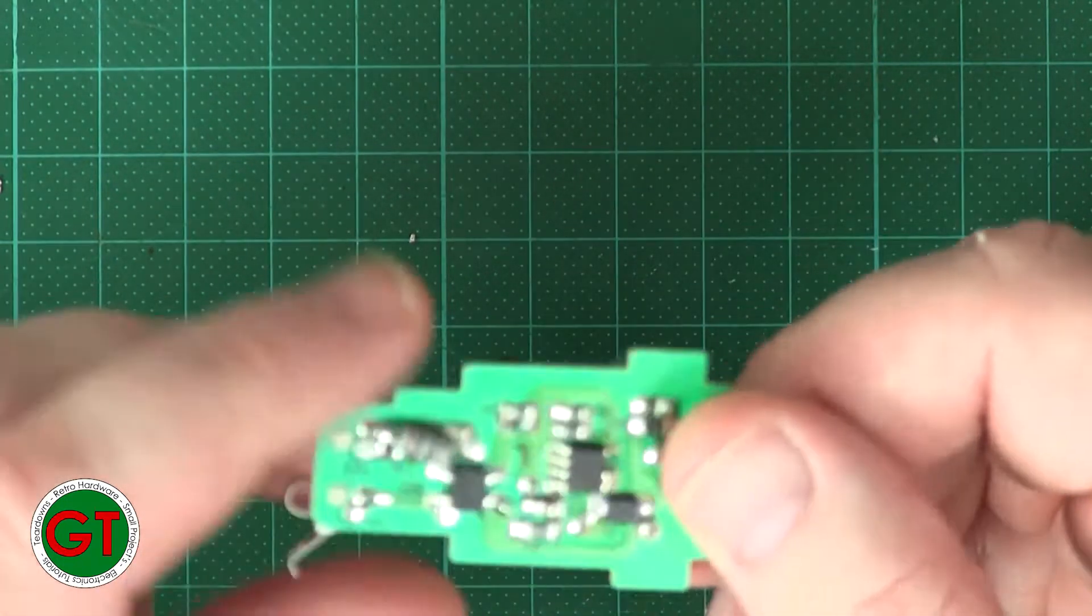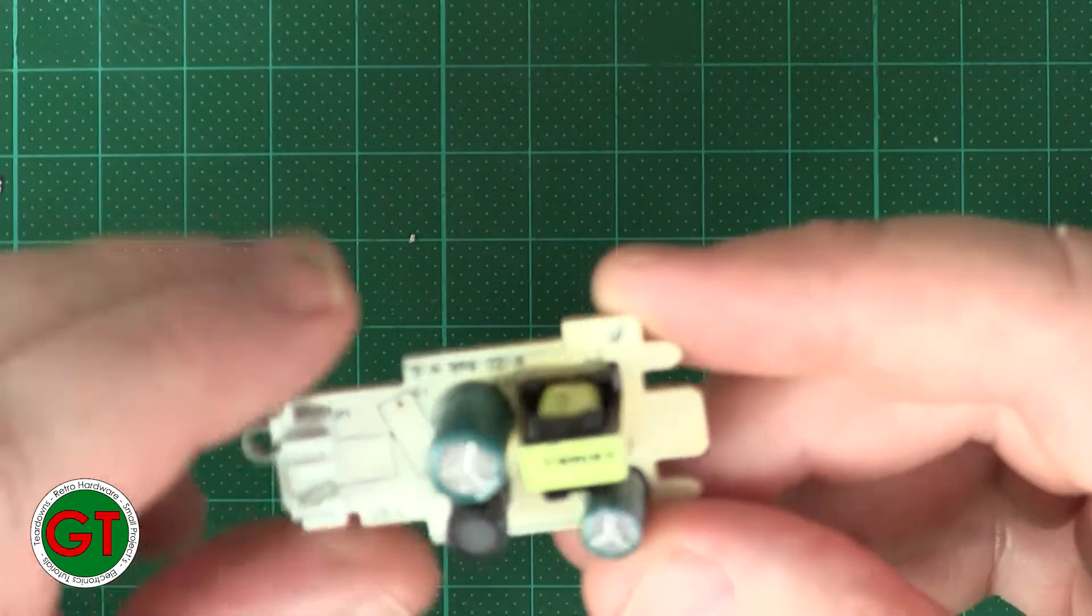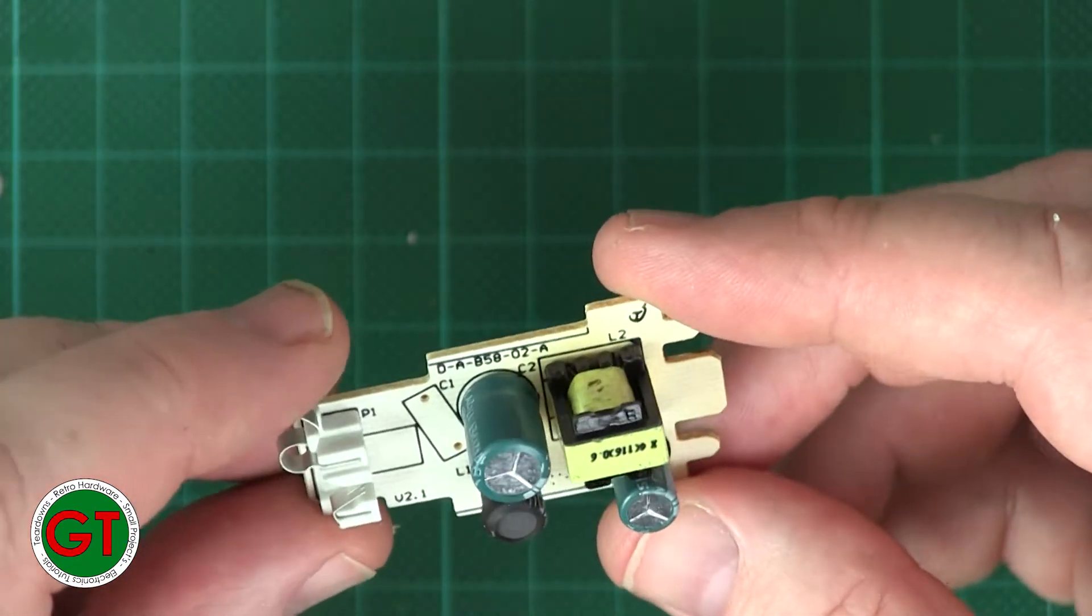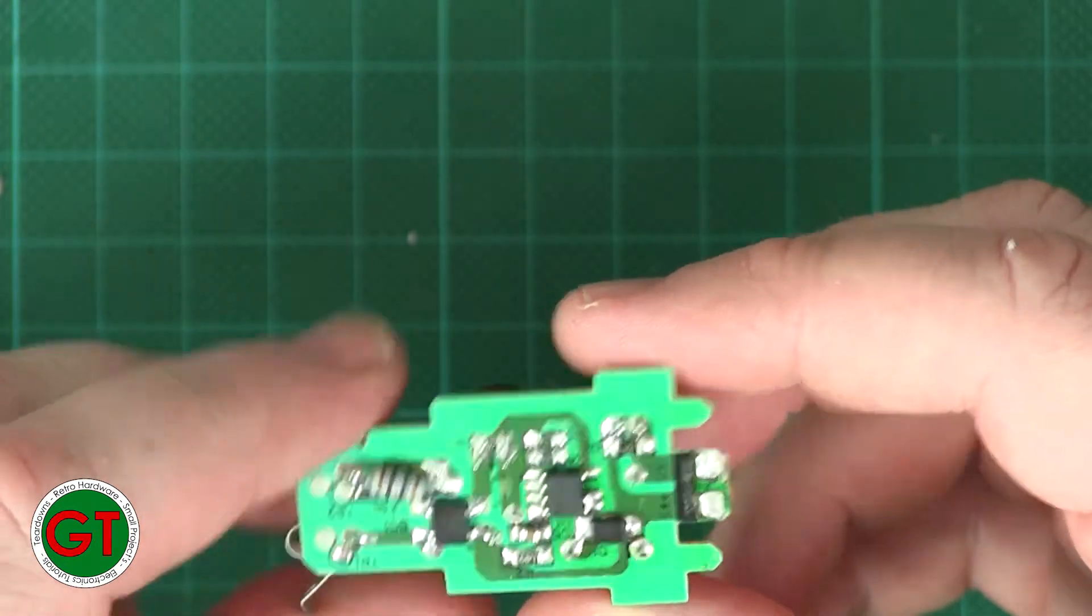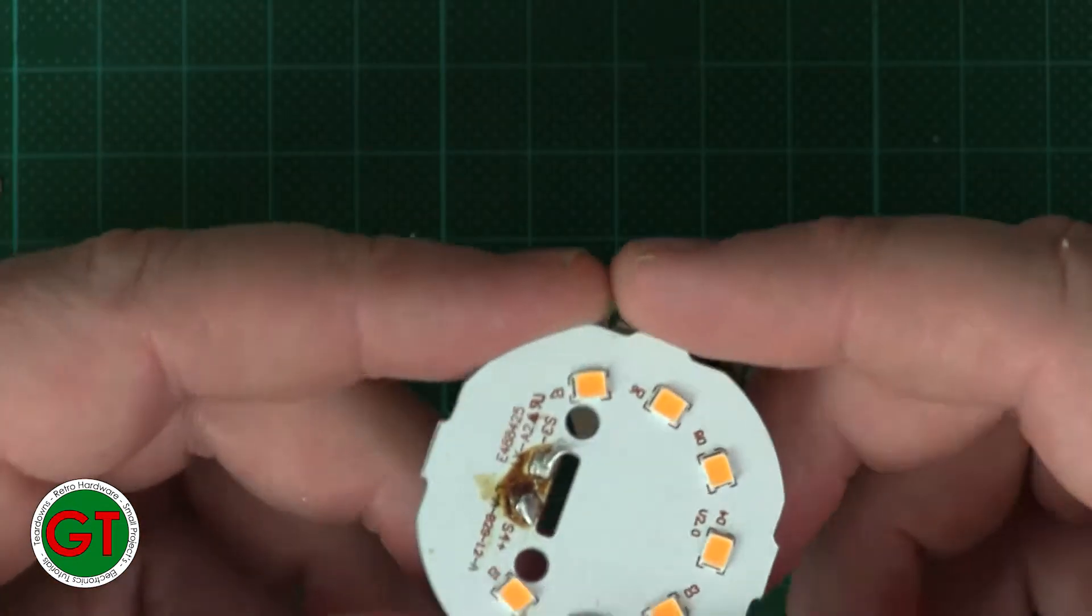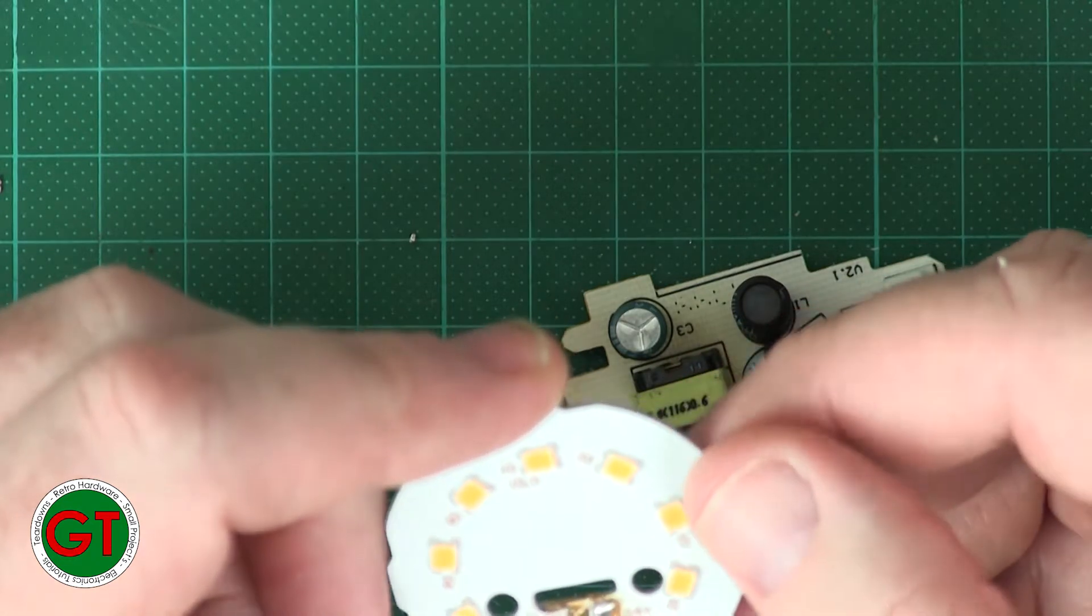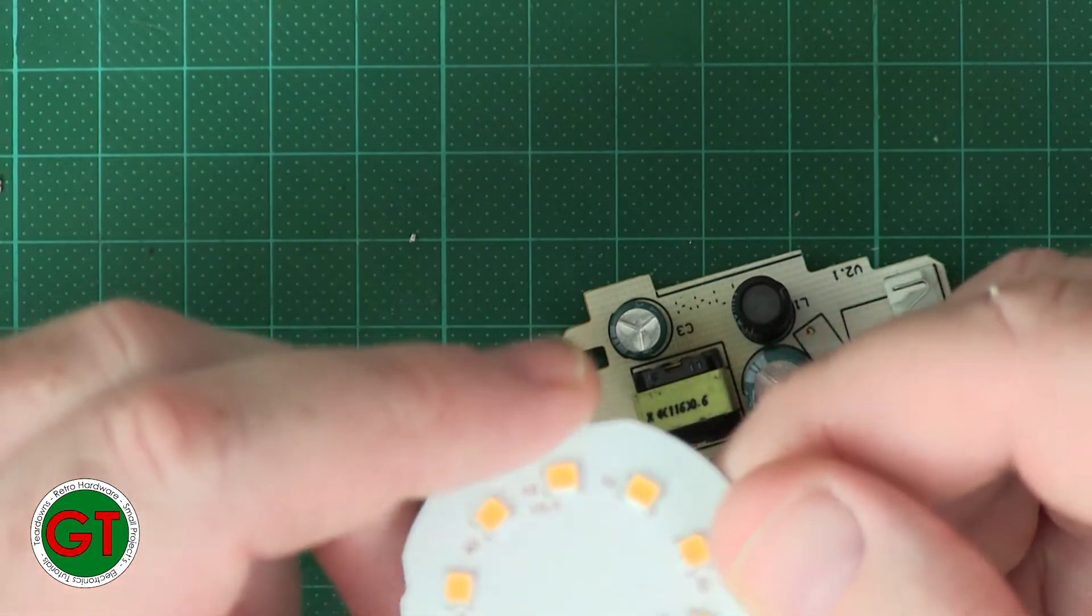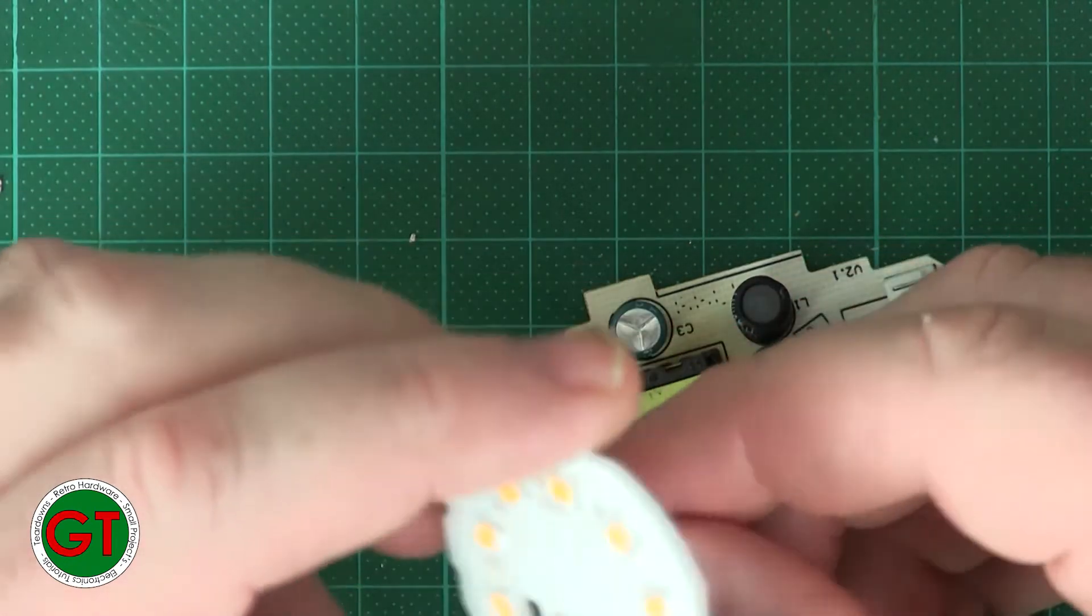The cheap ones would use a capacitive dropper, but this looks like it's using a very small switch mode power supply to run these things. You know, I quite like the design of that. It's a shame it's failed. Not sure if we can test any of these LEDs. Maybe I can get the power supply on it and see if we can light some of them. Not sure what voltage they're going to be.